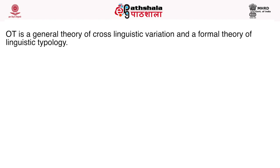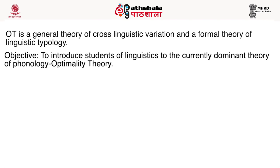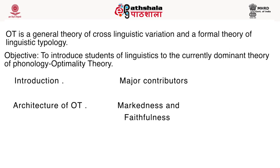Optimality theory is a general theory of cross-linguistic variation and a formal theory of linguistic typology. It is used not only in phonology but also in other areas of linguistics such as semantics and syntax. In this module we are going to discuss about OT in depth: how OT works, what is the architecture of OT, who are the major contributors of OT, and the basic thing that OT deviated from rule-based phonology — based on constraints and not rules. We are going to talk about these constraints in detail: the markedness and the faithfulness constraints.